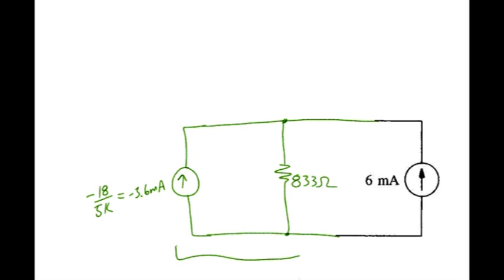Let's go ahead and observe then that we've got minus 3.6 milliamps flowing this way, 6 milliamps flowing that way. So we've got a total of 6 minus 3.6 or 2.4 milliamps in this direction. Turns out if we then take the product of that resulting current times 833 ohms, we're left with 2 volts.